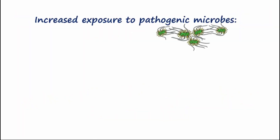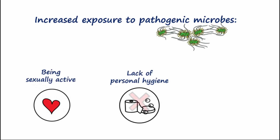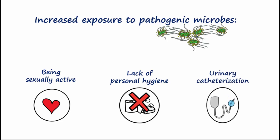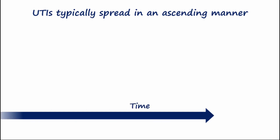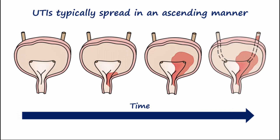Certain things increase the risk for urinary tract exposure to microbes. Being sexually active, lack of personal hygiene, and urinary catheterizations are all examples that increase exposure of pathogens to the urinary tract. Urinary tract infections typically spread in an ascending manner from the urethra to the bladder, up the ureters, and potentially even to the kidneys.